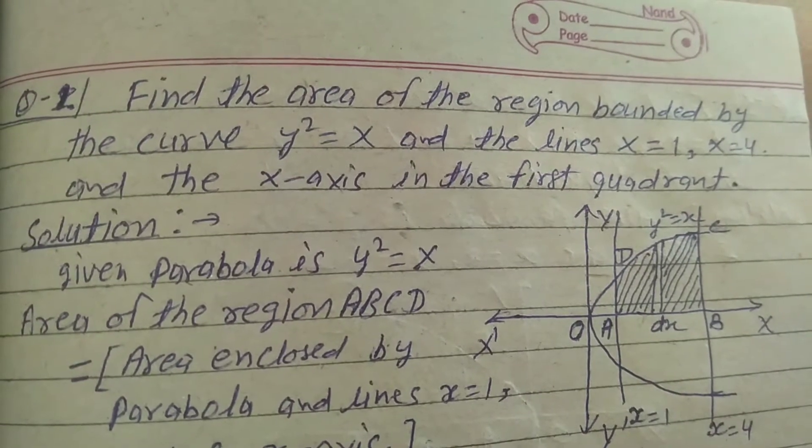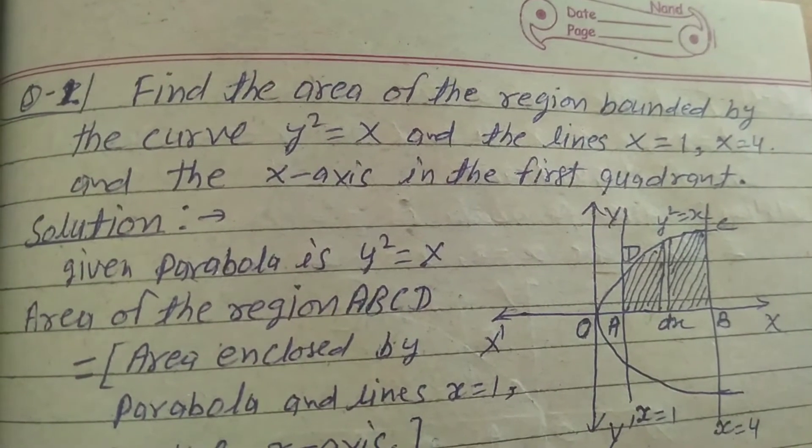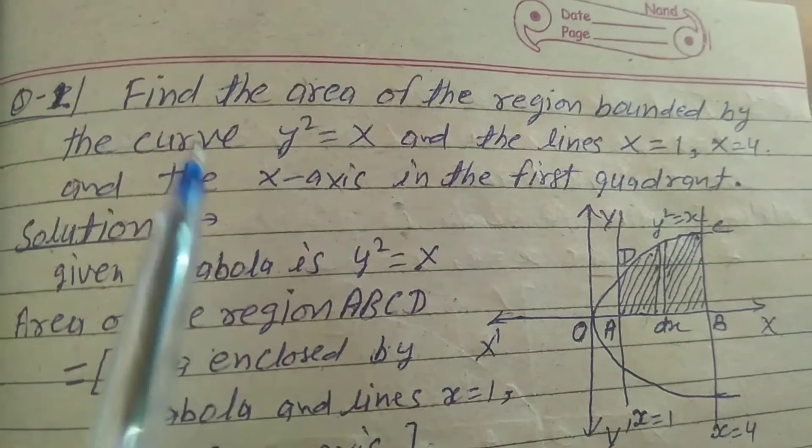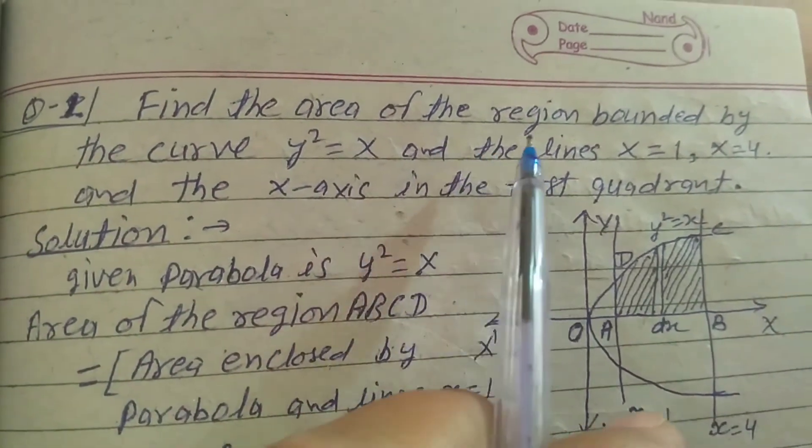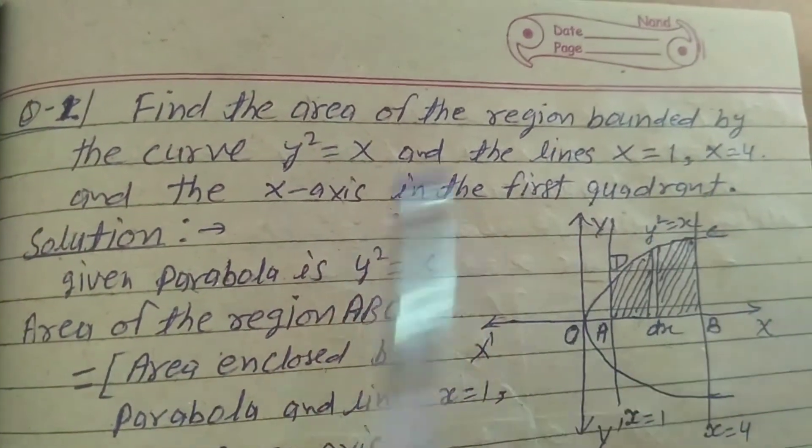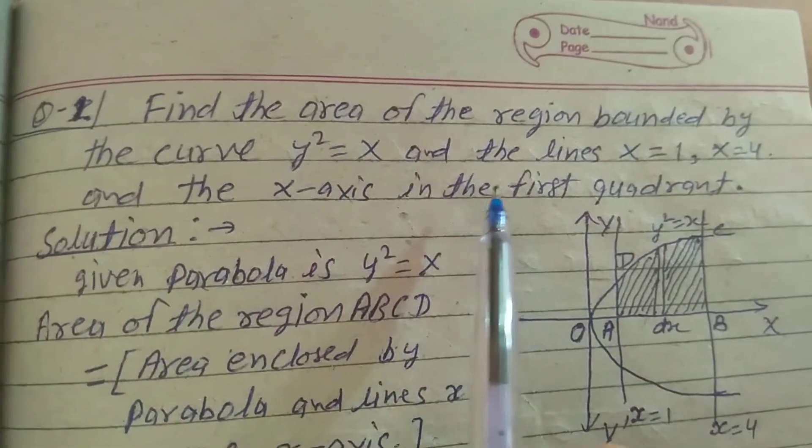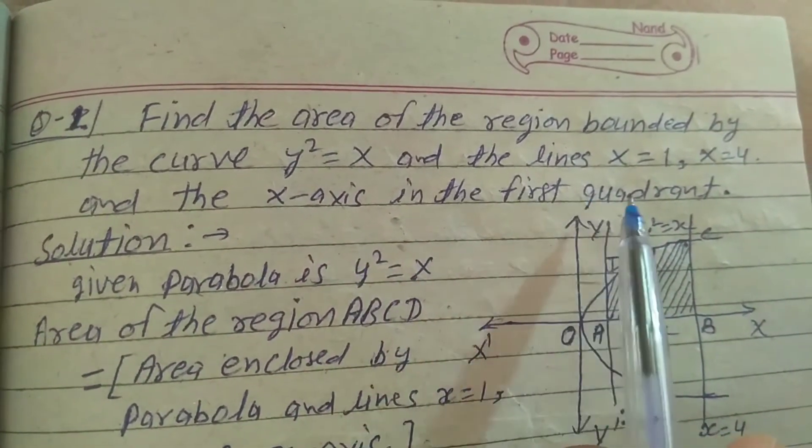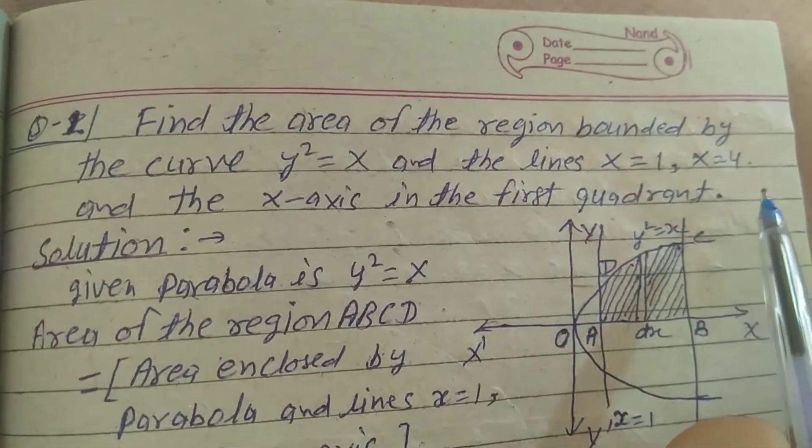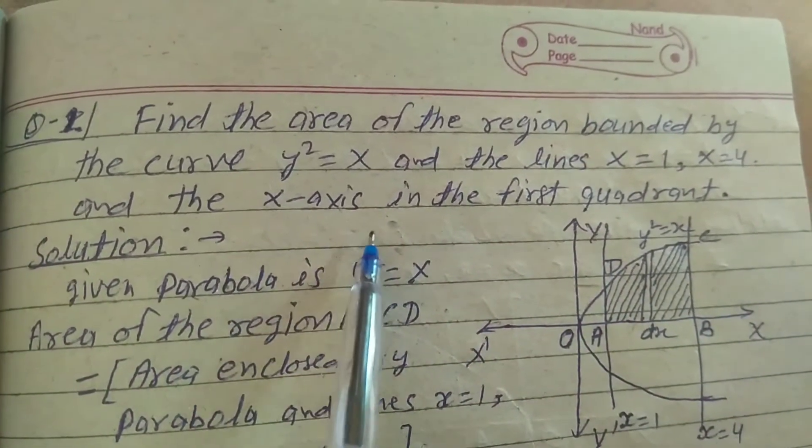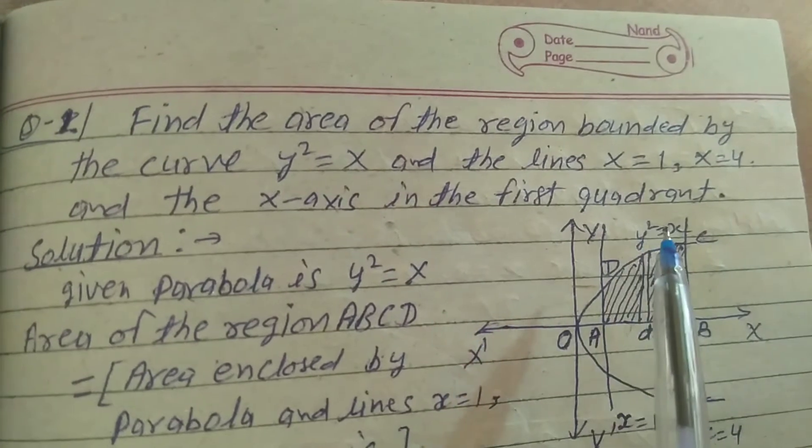Explain the question number first of exercise 8.1, class 12. Find the area of the region bounded by the curve y² = x and the lines x = 1, x = 4, and the x-axis in the first quadrant.